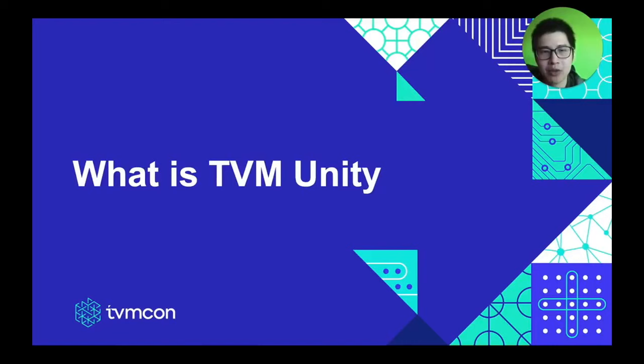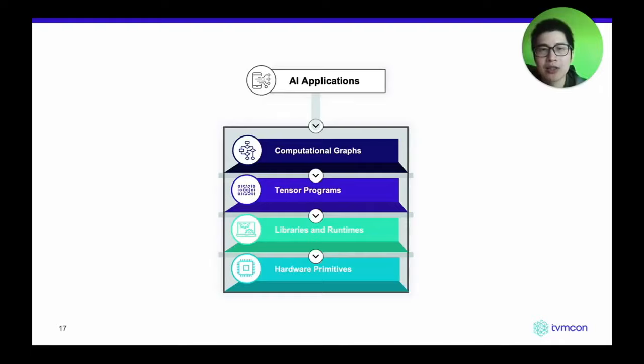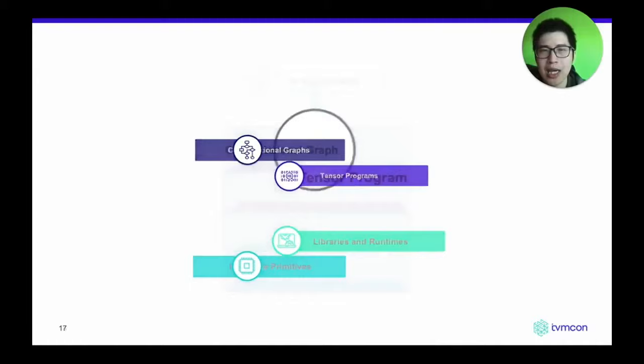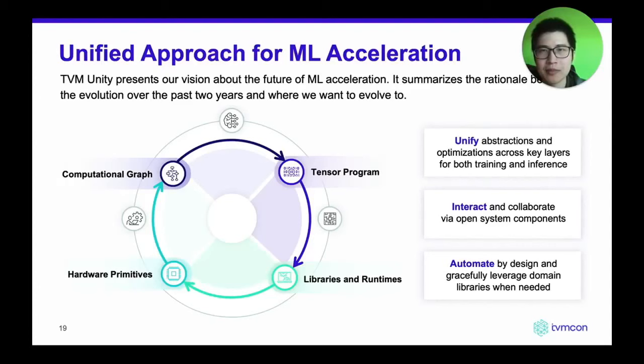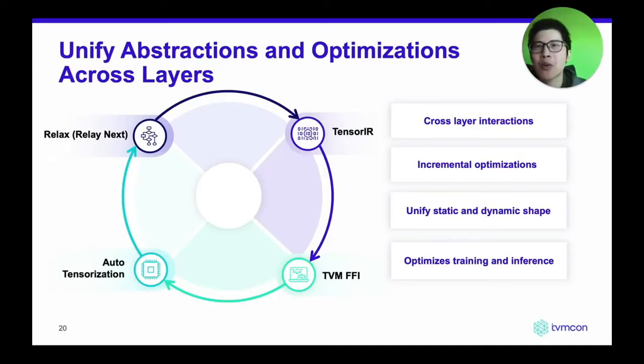By capturing those lessons, the community has been collectively coming together to work on several topics that form a common theme we call TVM Unity. The high-level goal of TVM Unity is to take an approach that looks like a multi-stage lowering closed-box and transform it into a more virtuous circle that allows different layers of abstraction to interact with each other organically, enabling a broader range of collaborations across machine learning scientists, hardware vendors, and machine learning engineers.